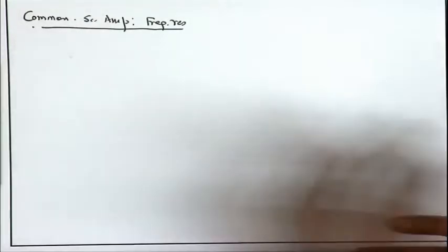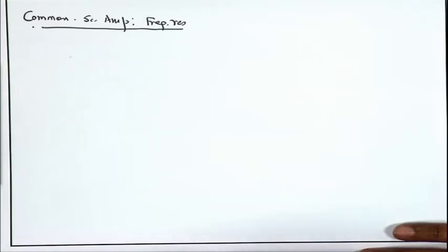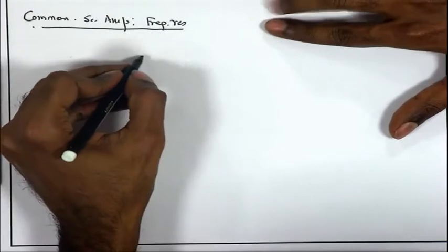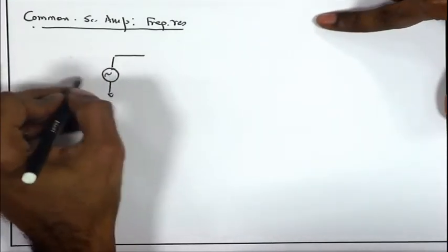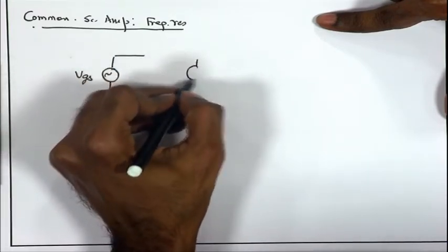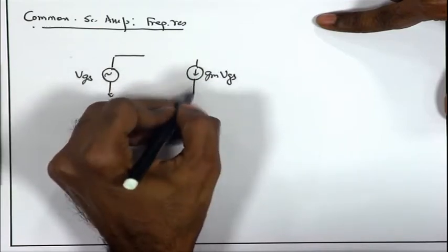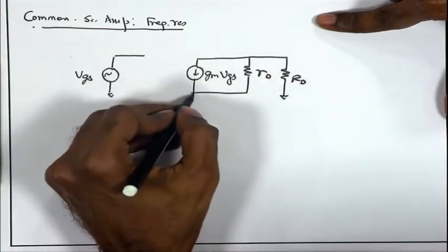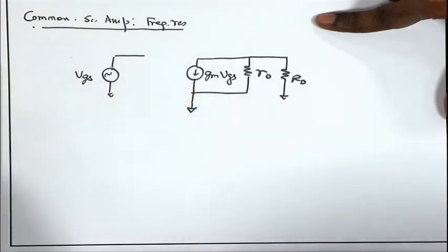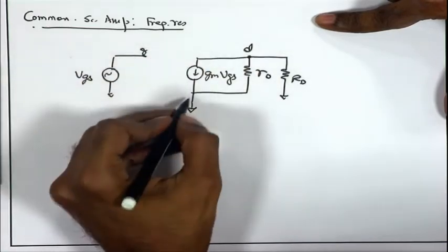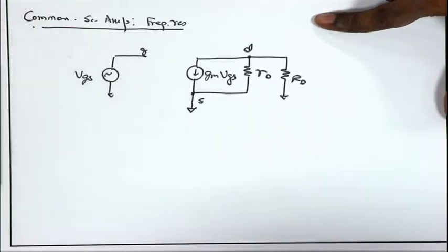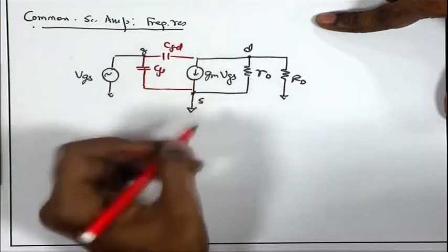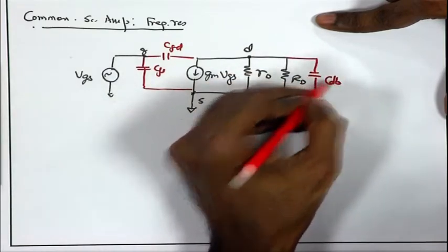To analyze frequency response, all we need to do is add the high frequency capacitances to the small signal model. I will redraw the same model but with added small signal capacitances. What are the capacitances? Let me mark the terminals G, D, and S, assuming that body is grounded. You will have CGS, CGD, CDB, and CSB.